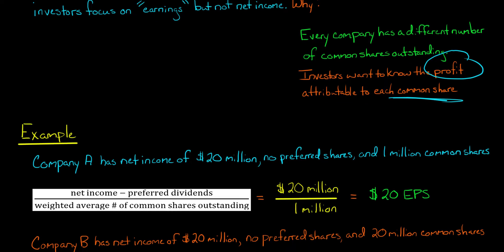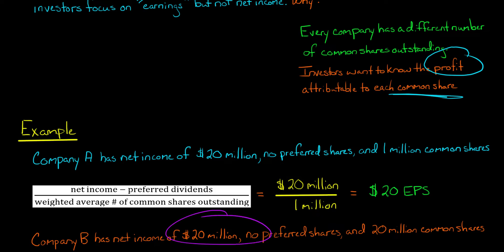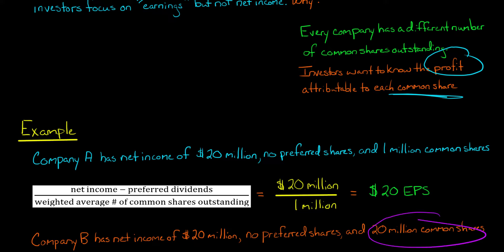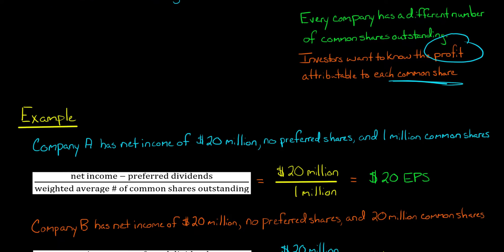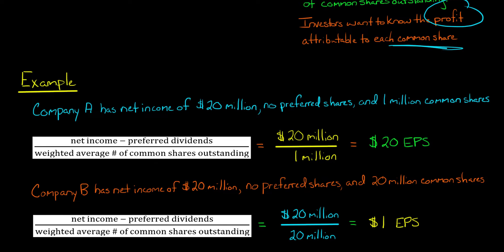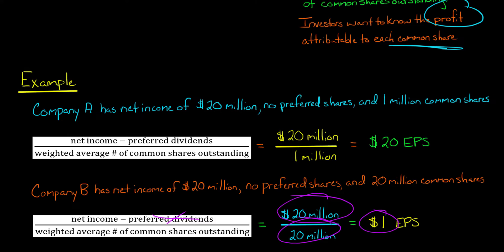Now let's compare that to Company B. Let's say Company B has the same net income. So if you're comparing just on net income, you'd say they both have the same net income, they did equally well. No preferred shares, and then $20 million common shares outstanding. We still have $20 million as the net income in the numerator, there's no preferred dividends. But now we have $20 million in the denominator. The denominator is higher because the company has a lot more common shares outstanding, and so its earnings per share is lower — just $1, compared to $20 for the other company.